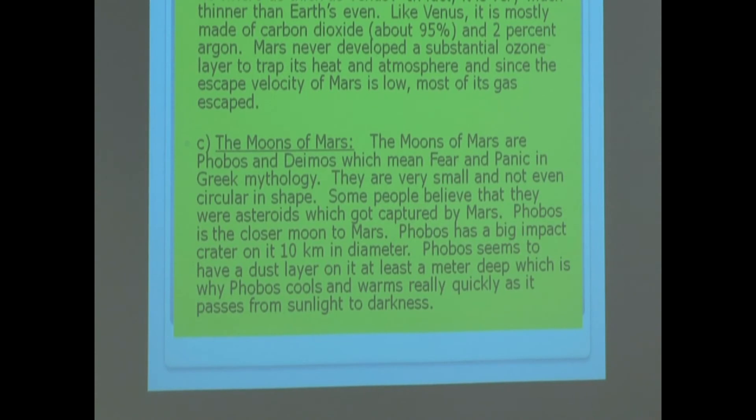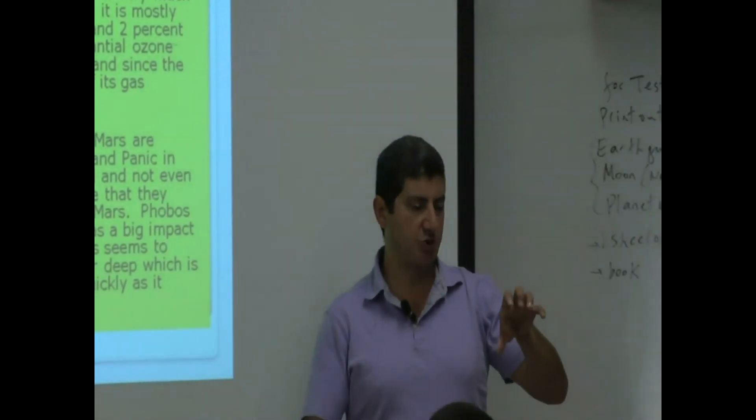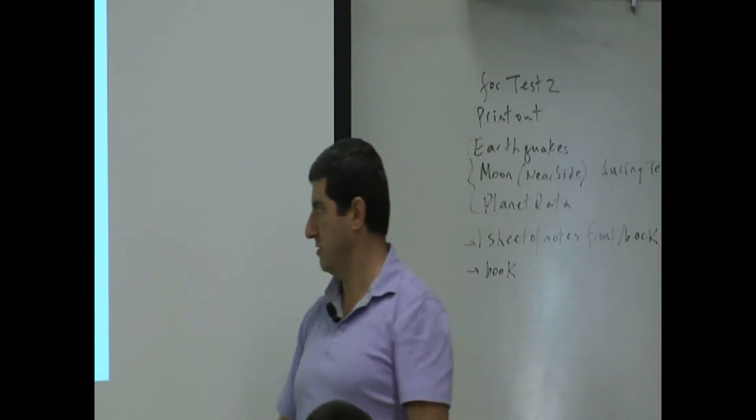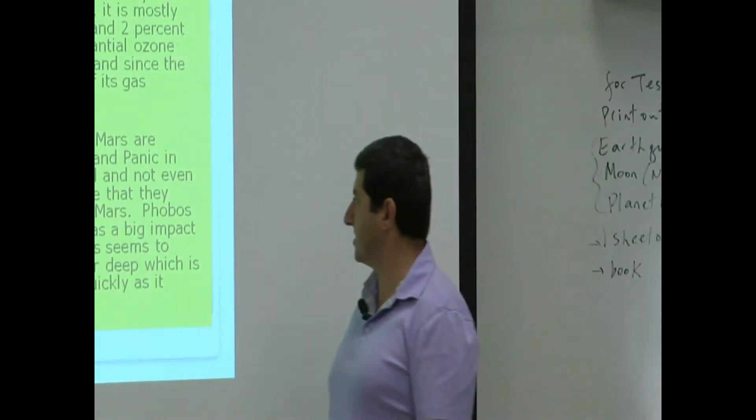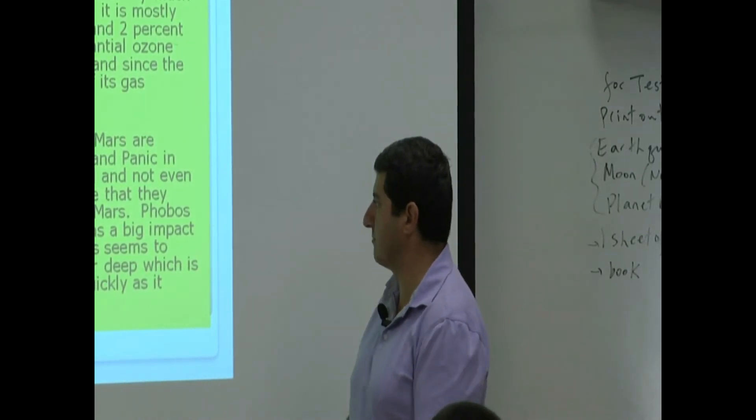Phobos has a big impact crater on it, 10 kilometers in diameter. It looks like a potato shape, and there's a whole big hole. Phobos seems to have a dust layer on it, at least a meter deep, which is why Phobos cools and warms really quickly as it passes from sunlight to darkness.